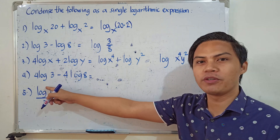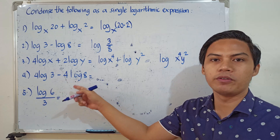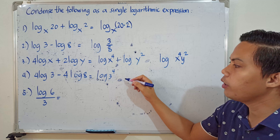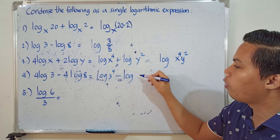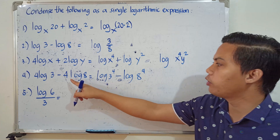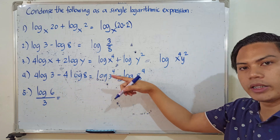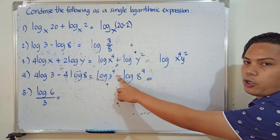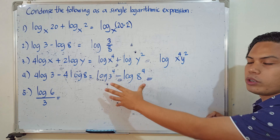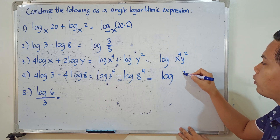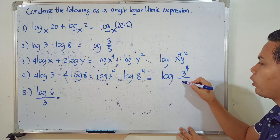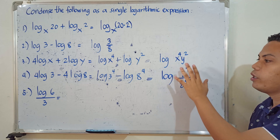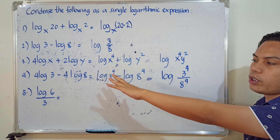Number 4: 4 times the logarithm of 3 minus 4 times the logarithm of 8. Using the power rule, the numerical coefficients become exponents: logarithm of 3 raised to 4 minus logarithm of 8 raised to 4. Since the operation is subtraction, we apply the quotient rule. The final answer is the logarithm of 3⁴ over 8⁴.